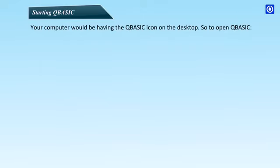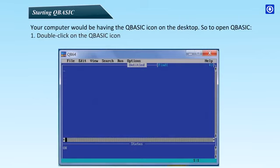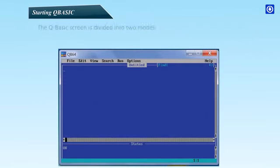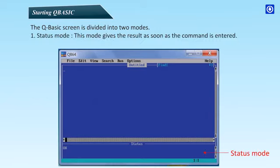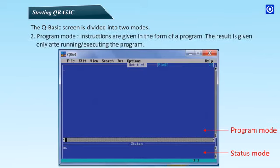Starting QBasic: Your computer would be having the QBasic icon on the desktop. To open QBasic, double-click on the QBasic icon. A blue screen appears. The QBasic screen is divided into two modes: Status mode and program mode. Status mode gives the result as soon as the command is entered. Program mode: instructions are given in the form of a program and the result is given only after running or executing the program.